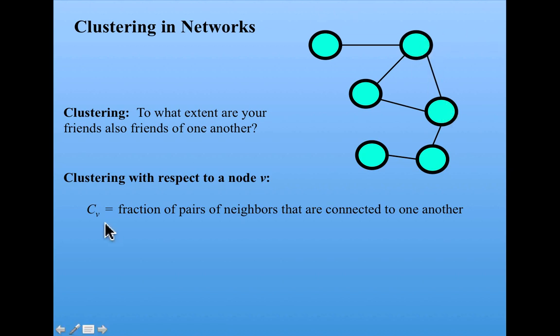So its clustering is one. All of its neighbors are connected to each other. So the fraction of pairs of neighbors that are connected to each other is one. Whereas for this node, it has three neighbors, but not all of its neighbors are connected to each other. These two are connected, but this one is not connected to its other neighbors.